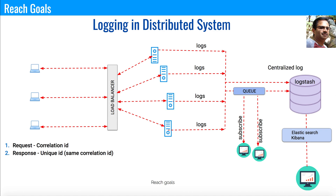The second point is that the response should have a unique ID — similar to the correlation ID — so you can track where a request came from, how it was generated, where the error occurred, and how it shows up in the response. Third is a standard log format. In a distributed system with multiple services, each generates its own log format. Different formats make indexing and searching difficult, so use a standard service with a wrapper to convert all log information into a unique standard log structure before sending it to the centralized log server.